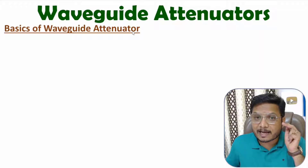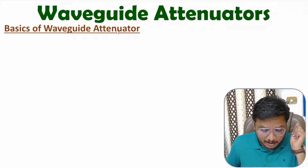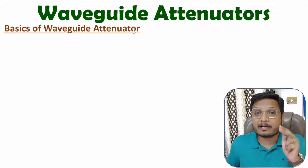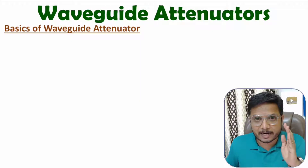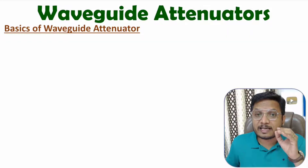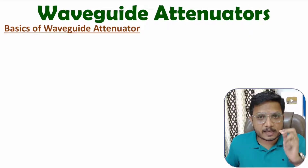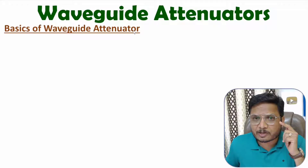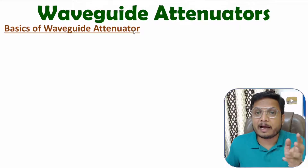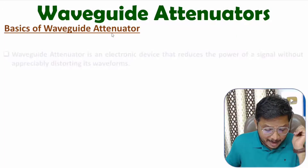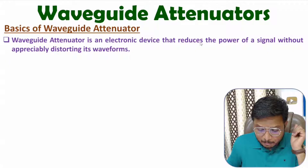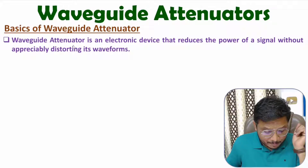First of all, one should know what an attenuator is. The attenuator attenuates the input signal, so at the output side we will have lower power compared to the input side. We will not change the waveform of the input signal. So without distorting the input signal waveform, at the output side we will be lowering the power. The attenuator reduces the power of the input signal without appreciably distorting its waveform.